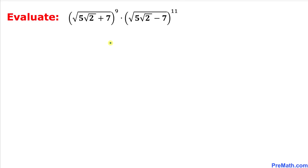Welcome to pre-math. In this video we are going to find the value of this given radical problem. The problem is: square root of 5 times square root of 2 plus 7, whole power 9, times square root of 5 times square root of 2 minus 7, whole power 11.